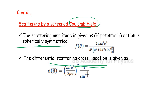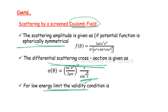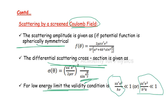The differential scattering cross section is: σ(θ) equals that expression squared. For the low energy limit — when ka is much less than 1 — the formula reduces to: (ZZ'e²)² / (2μv)² multiplied by 1/sin⁴(θ/2). Note: ZZ'e² divided by 2μv, whole squared, times 1/sin⁴(θ/2). The validity condition is: (ZZ'e²) / (ℏ²k) much greater than 1.